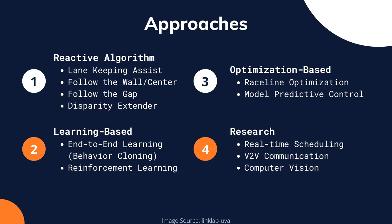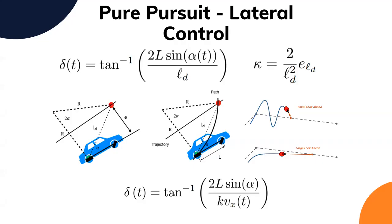Question: Does the pure pursuit control algorithm handle dynamic obstacles? Answer: No, this does not handle obstacles at all — it just minimizes the lateral error and helps steer back to the reference trajectory given by the path planning algorithm. There is no implementation of obstacle avoidance.